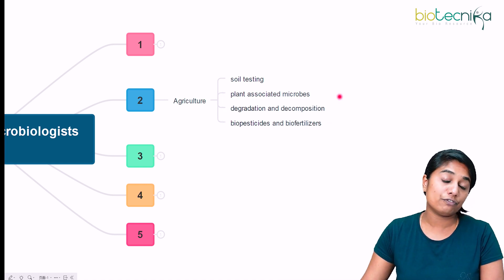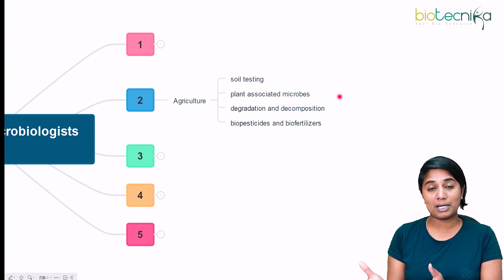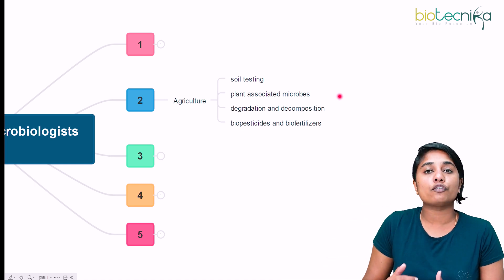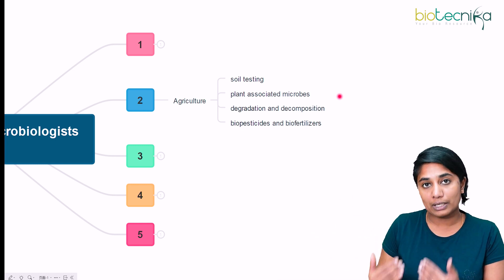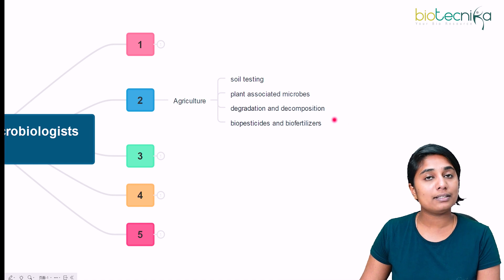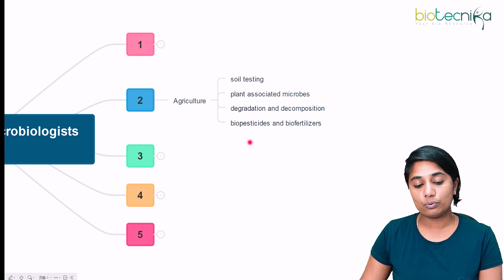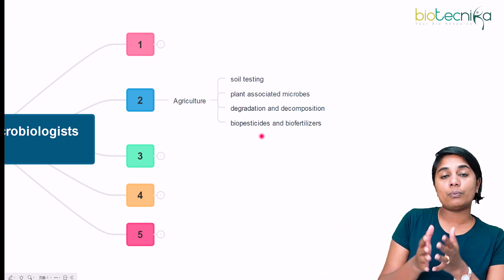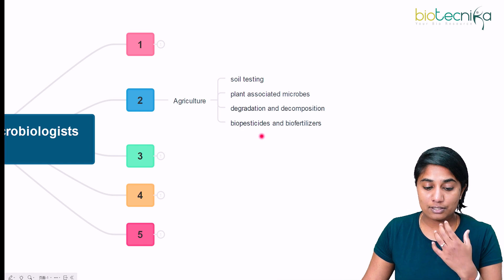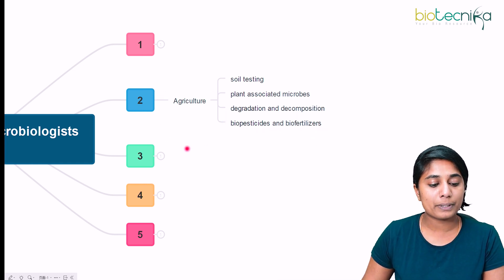The third role is degradation and decomposition. Microbes are important for decomposition of organic matter, which is essential for the nutrient cycle to continue. The last role in agriculture is biopesticides and biofertilizers. Microbiologists play a major role here, and if you want to directly support farmers, you can be involved in research and manufacture of biopesticides and biofertilizers.